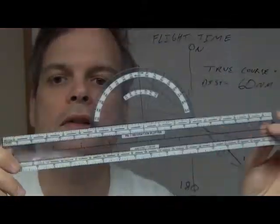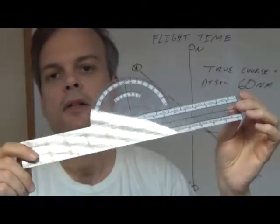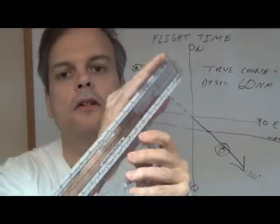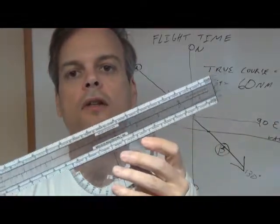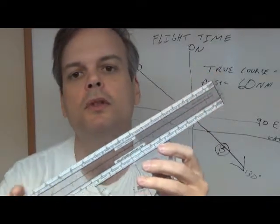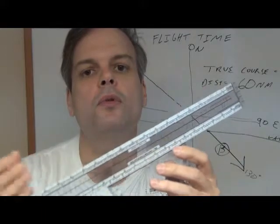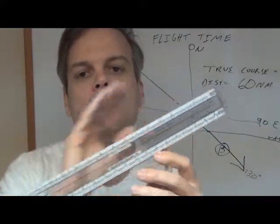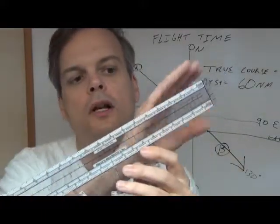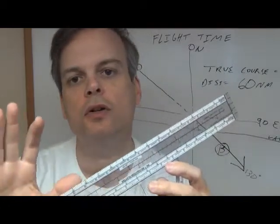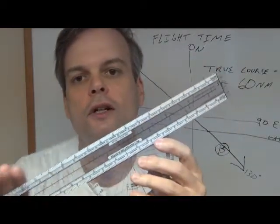Now here's the parts of the plotter that you're going to use. First of all, it's got a long straight edge. You're going to use that to draw lines between your destination airport and your departure airport. You'll be drawing lines, and I'll show you that on a chart later. I just want you to know you're using the straight edge of it.